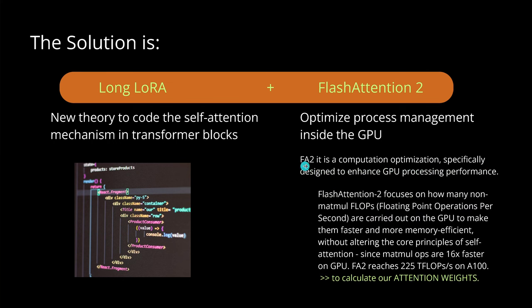Therefore we now have Flash Attention 2 — a further computational optimization specifically enhancing GPU processing performance. Some GPU design experts who know everything about the inner workings of GPUs focused on reducing non-matrix-multiplication FLOPs — floating-point operations per second — making them faster and more memory efficient, without altering the core principle of self-attention, because we want to use them together.